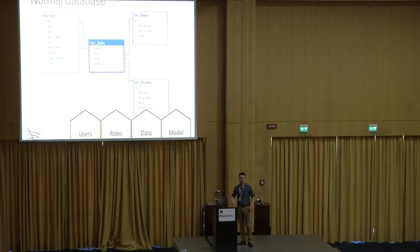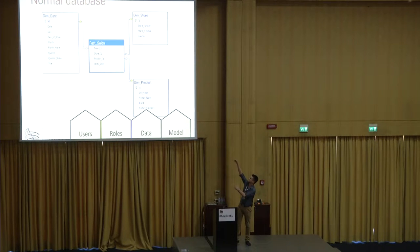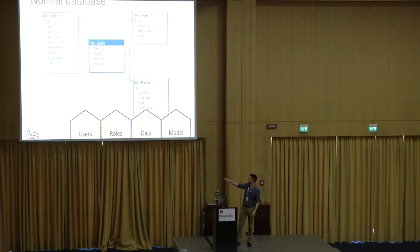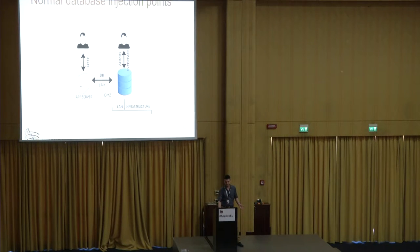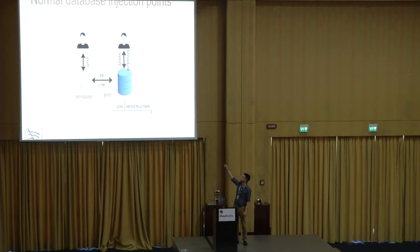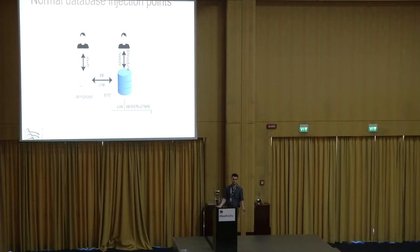These users have some roles in the database. They operate on data, and the data is based on some model. In a normal database scenario, you've got simple injection points — you can inject data from the user to the application server, attack the admin interface, as well as the infrastructure and the database link between the server and the database. That's what we are used to.